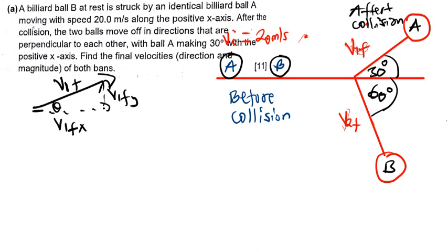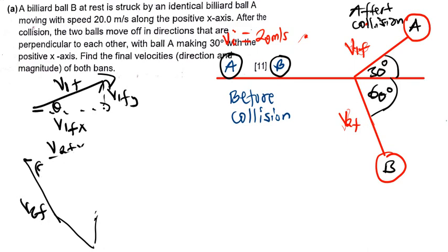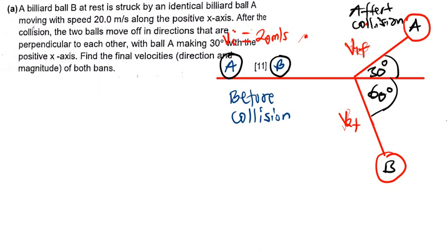Similarly for ball B, it also has x and y components: V2 Fx and V2 Fy. Using the vector component approach — SOHCAHTOA — in the x-direction we expect to use cosine. Since the ball is moving in both x and y, I'll set up two equations: one for x-direction and one for y-direction.